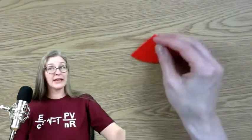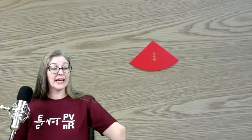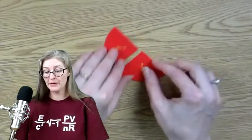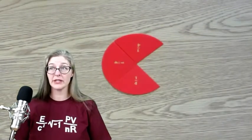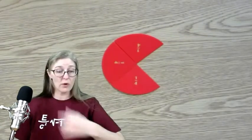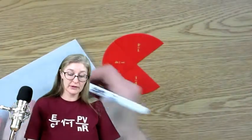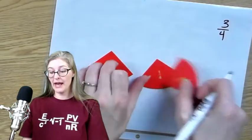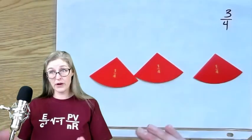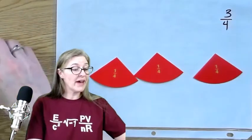Now, I can use these to start building some very interesting numbers. If I have less than one, that's a proper fraction — one-fourth. And then I can start building more fractions. Here I have three-fourths, and so my fraction is a proper fraction, three-fourths.